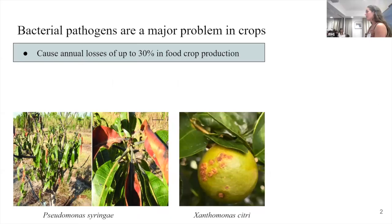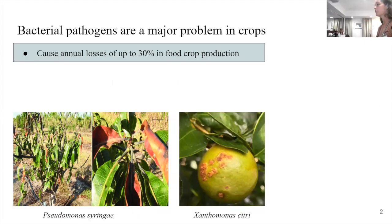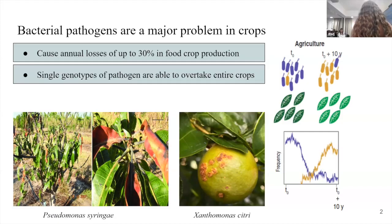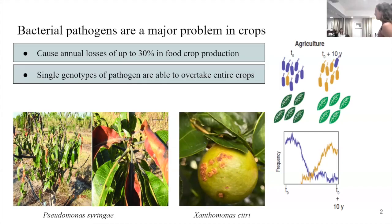It's well known that bacterial pathogens are a major problem in our crops. They can cause annual losses of up to 30% in crop production, which totals in billions of dollars of loss annually. What we know is that oftentimes single genotypes of the bacterial pathogen are responsible for outbreaks in entire fields of crops. If you went to a field at one point in time, you'd see that most of the genetic diversity within the leaves is a single pathogen taking over.